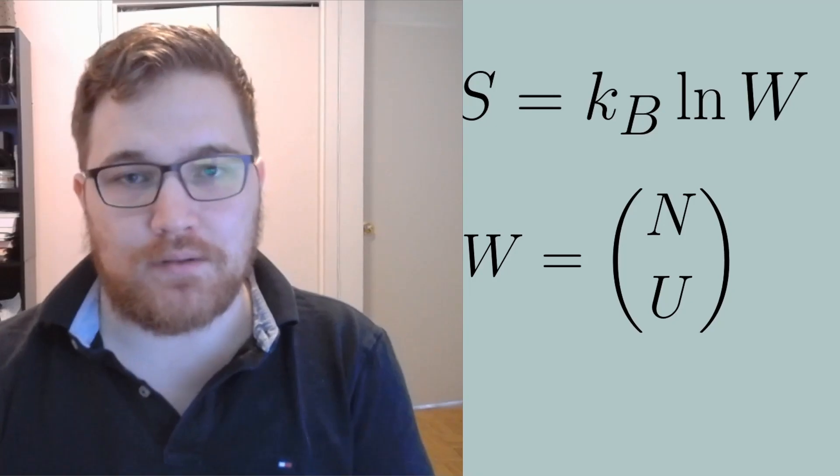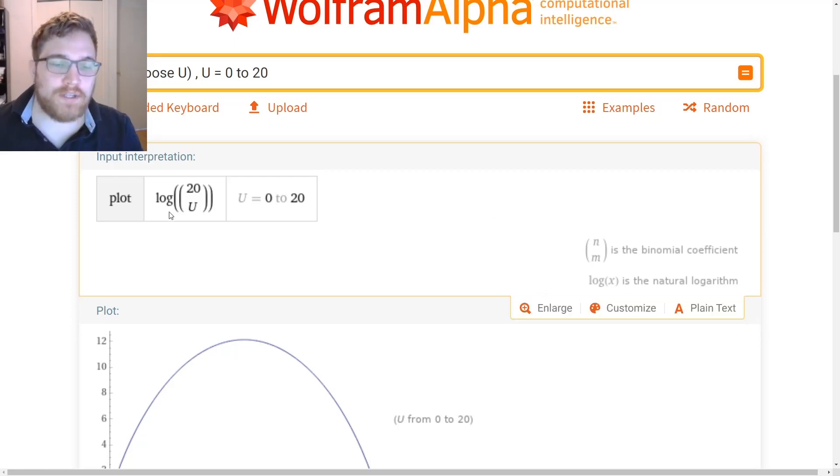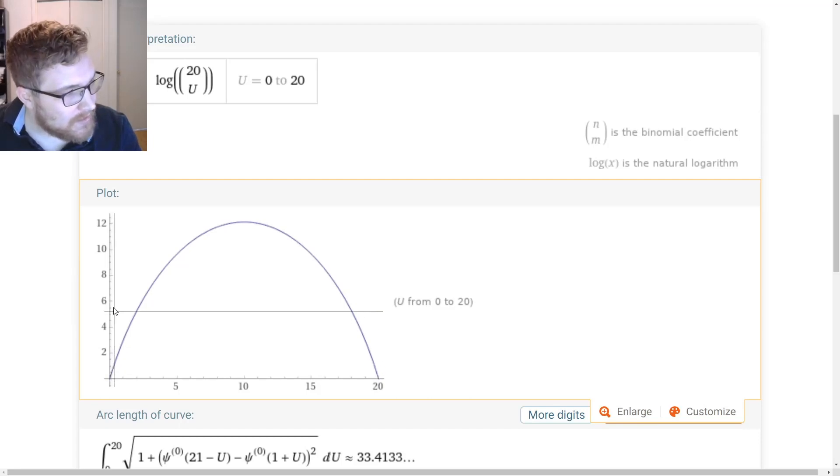We can again go to Wolfram Alpha to get some intuition. Let us look at how entropy changes with n equal to 20 total spins, and we vary the number of up spins. Here we plot the natural logarithm of 20 choose U, where U goes from 0 to 20. The vertical axis here is then our entropy, and the x-axis is the total number of up spins that we have, which then corresponds directly to how much energy we have in our microstates. The highest point for entropy here on the graph is when we have half the spins up and half of the spins down.